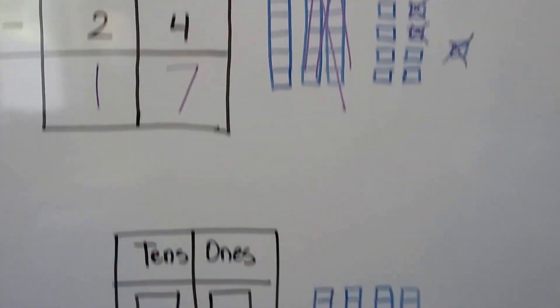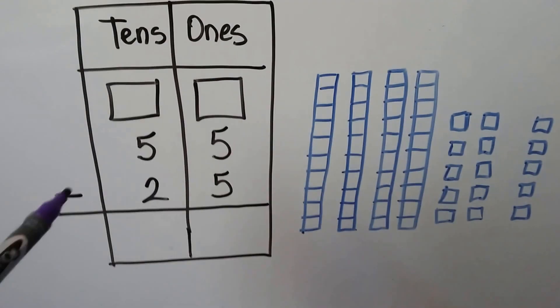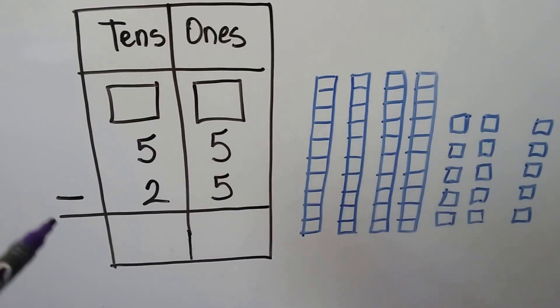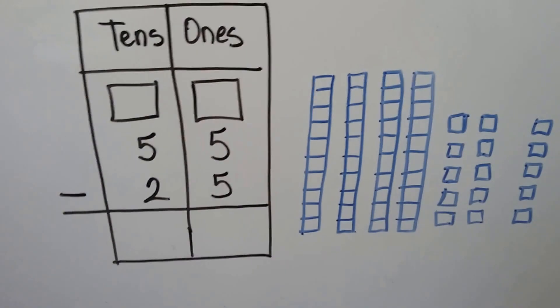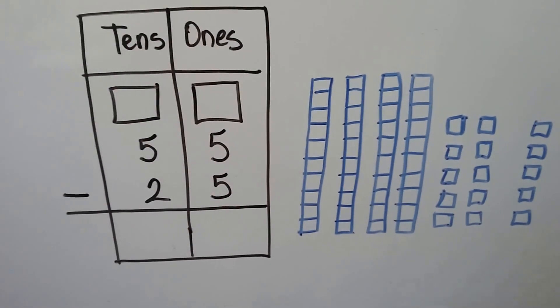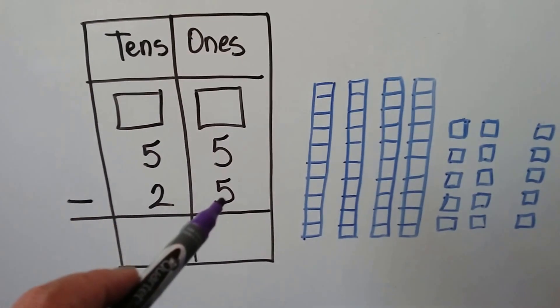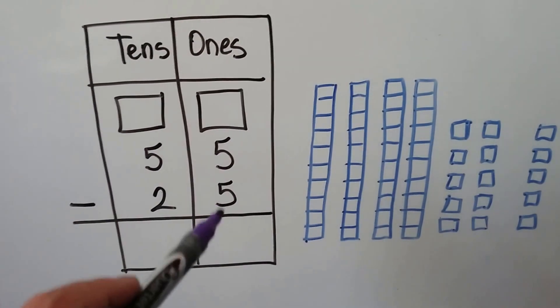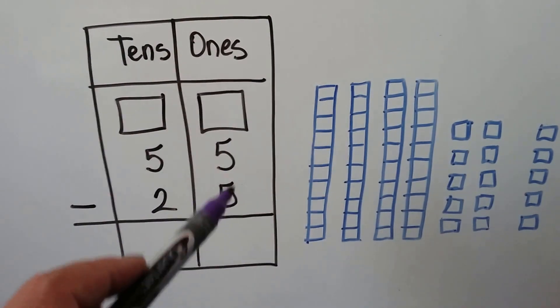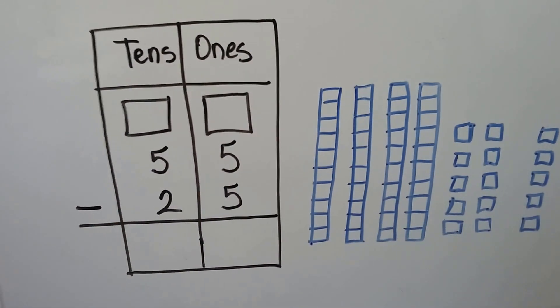Alright, let's try it again. Here we have fifty-five minus twenty-five. Do we need to regroup? We have five minus five. Well, this five is not larger than that five — they're the same number.